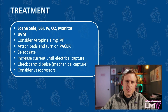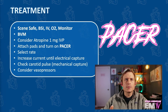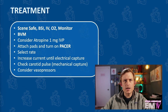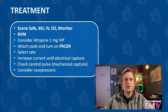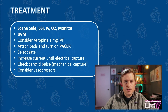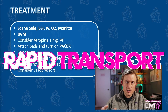I'll place pads on the patient, turn on the pacer function on my monitor, select my rate — which can be anywhere between 60 and 100 pulses per minute — and then I'll increase my current until I achieve electrical capture. I'll then check a carotid pulse to assure mechanical capture, and if needed, I can initiate vasopressors for better hemodynamic control. And of course, I'll end this card by saying rapid transport.